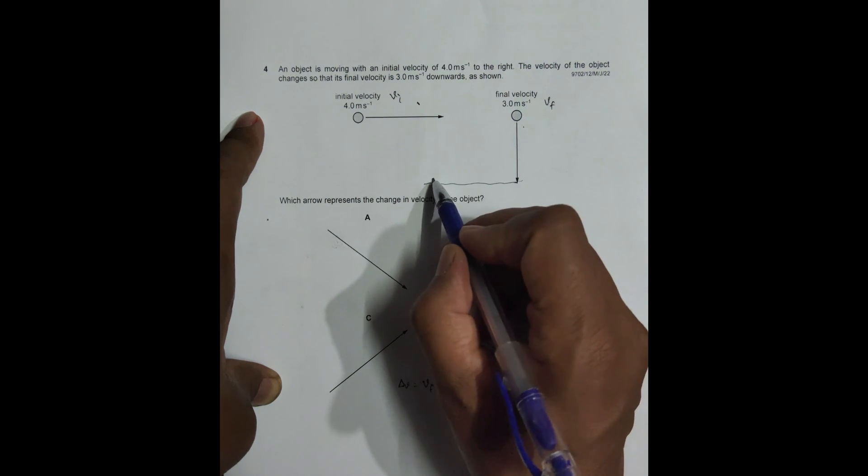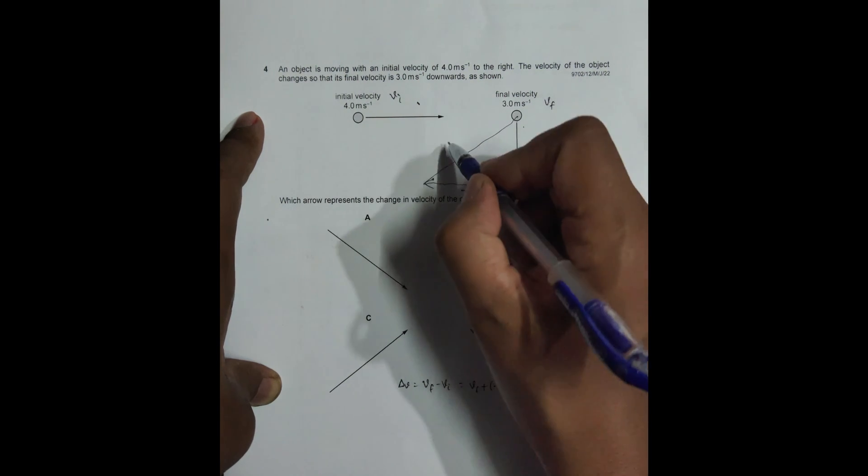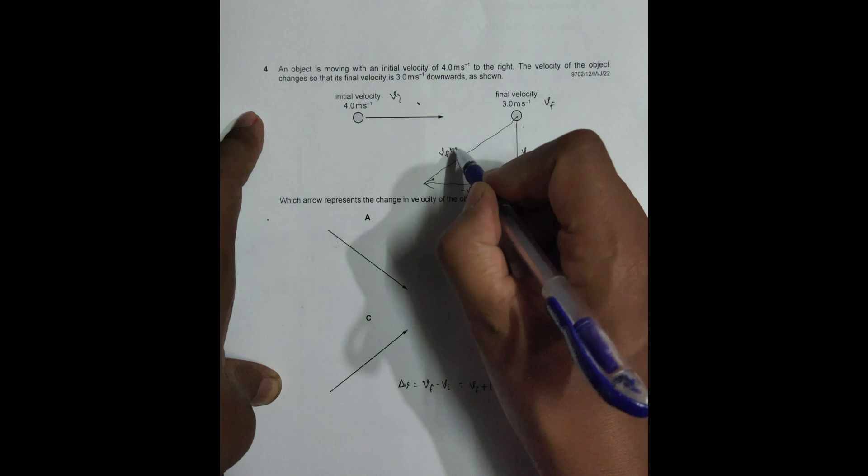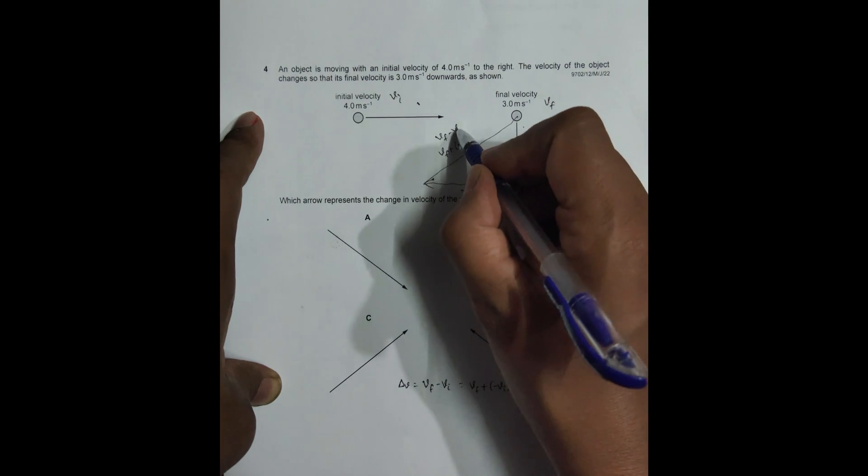So from the tip of this thing, minus Vi will be there. So this is Vf, this is minus Vi. This will be equal to Vf plus minus Vi. So that means it is Vf minus Vi.